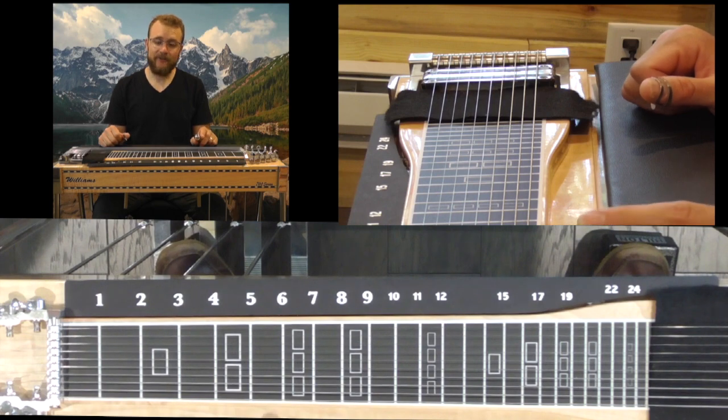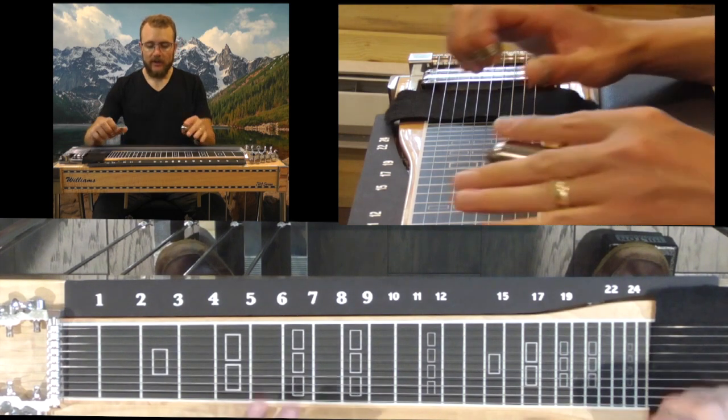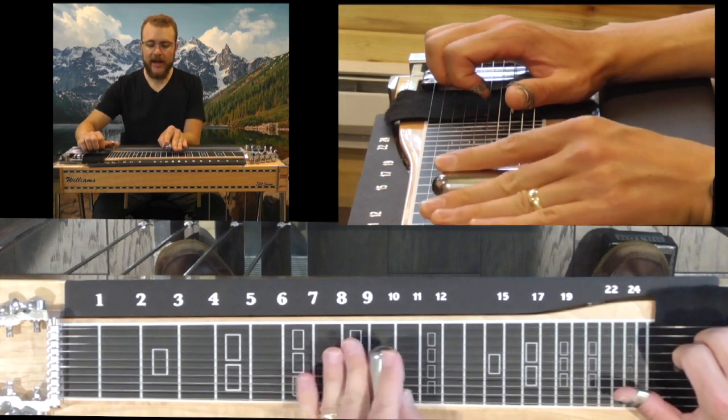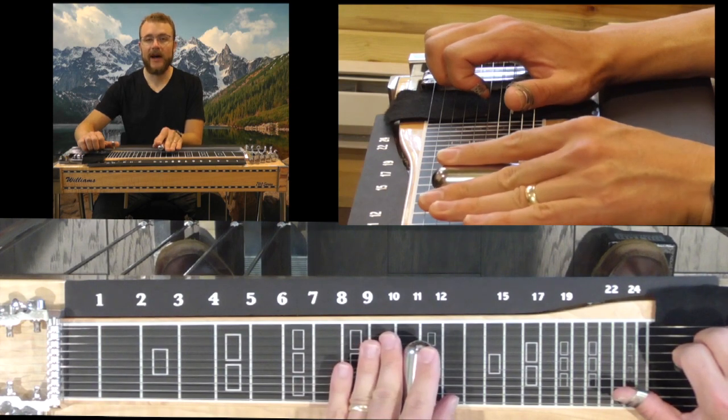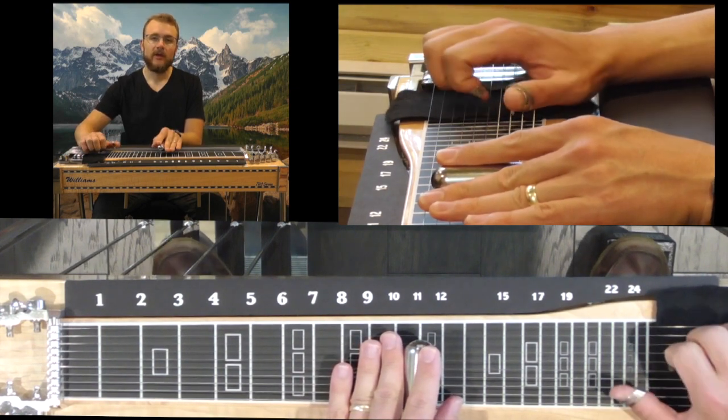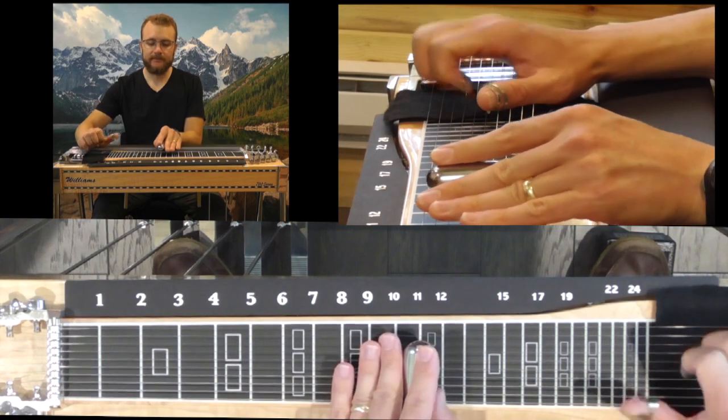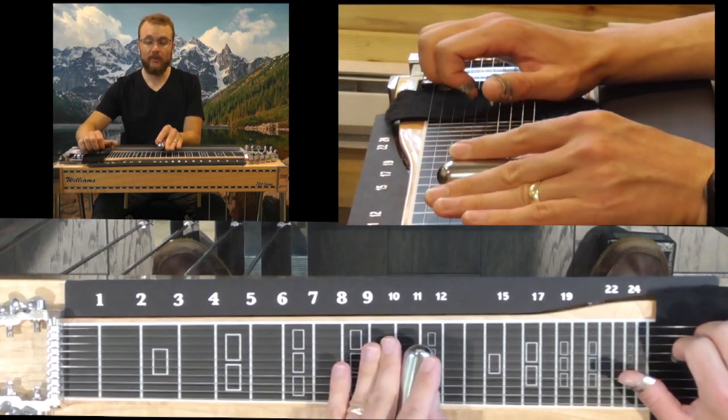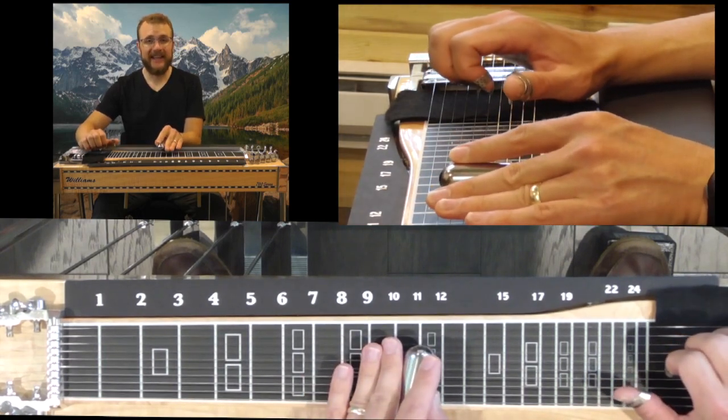What we're doing is we're starting off in our A flat closed position, so if I think about the 11th fret and strings 8, 6, and 5 with my A and B pedal down, I can go up to different grips. That's where I'm getting that A flat from.